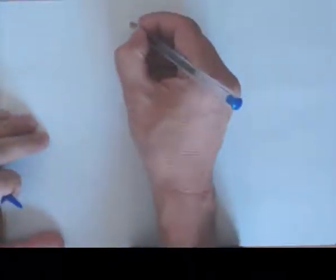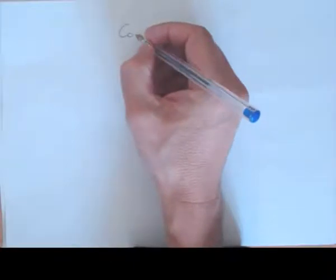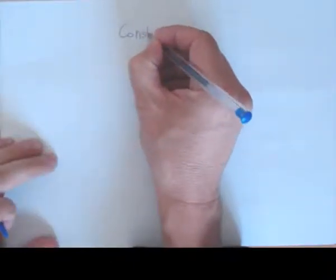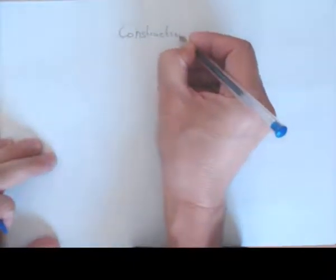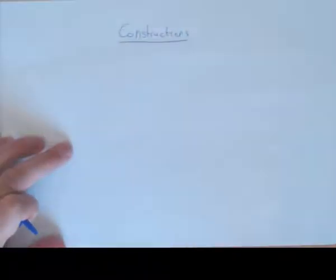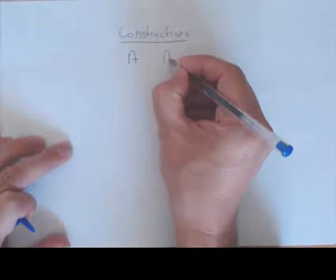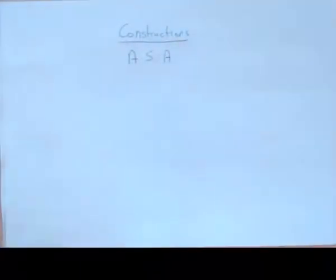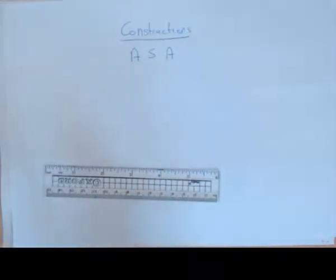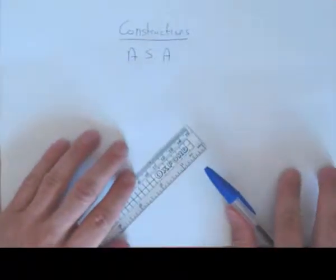Hello and welcome to Steps to Maths. Today in constructions we will be looking at constructing a triangle given two angles and the side between them. In this question you're going to be given the length of a particular side, and you're going to be asked to draw a line segment.